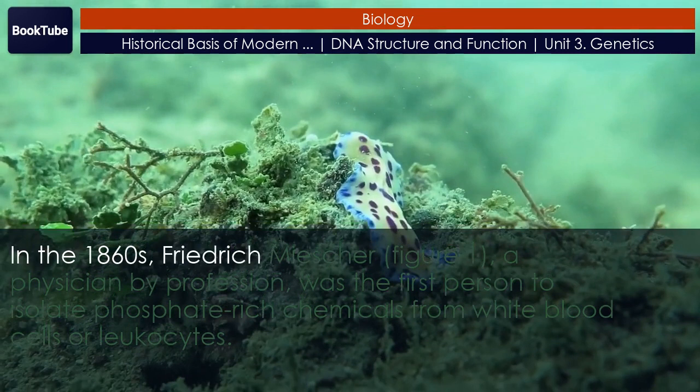Each batch of phage was allowed to infect the cell separately. After infection, the phage-bacterial suspension was put in a blender, which caused the phage coat to be detached from the host cell. The suspension was then spun down in a centrifuge. The heavier bacterial cells settled down and formed a pellet, whereas the lighter phage particles stayed in the supernatant. In the tube containing phage labeled with 35S, the supernatant contained the radioactively labeled phage, whereas no radioactivity was detected in the pellet. In the tube containing phage labeled with 32P, radioactivity was detected in the pellet containing the heavier bacterial cells, and no radioactivity was detected in the supernatant. Hershey and Chase concluded that it was the phage DNA that was injected into the cell and carried information to produce more phage particles, thus providing evidence that DNA was the genetic material and not proteins.